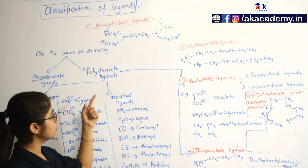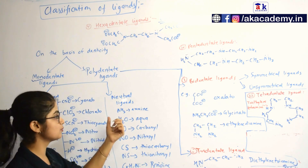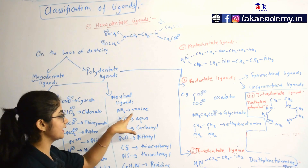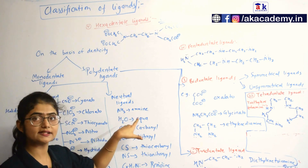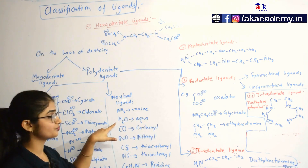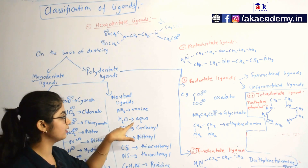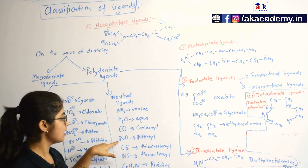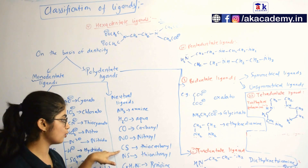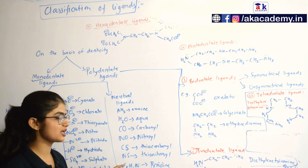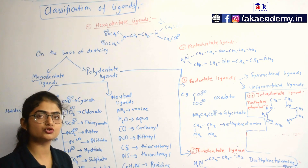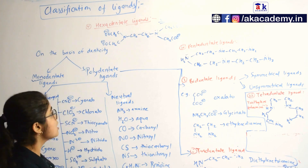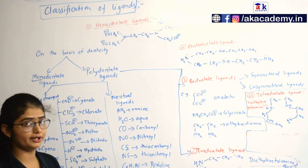Regarding neutral monodentate ligands, the most important ones are ammonia, referred to as amine; H2O, referred to as aqua; then carbonyl, nitrosyl, thiocarbonyl, thionitrosyl, and pyridine. There are many others, but these are the most important ones commonly used. That was about the monodentate ligand.